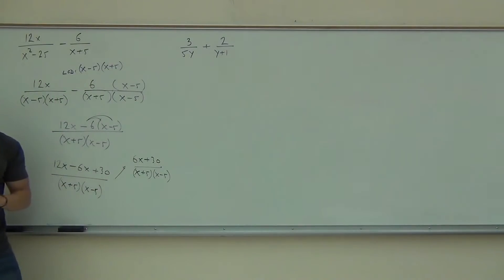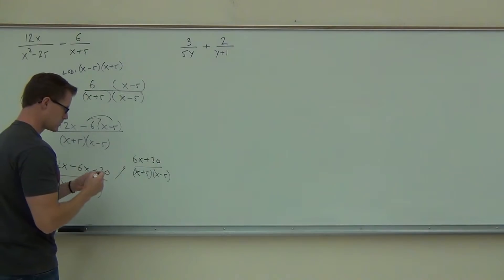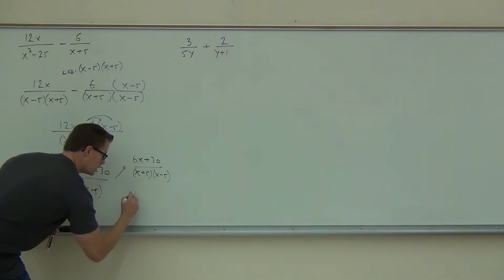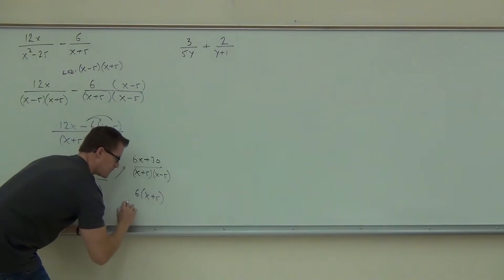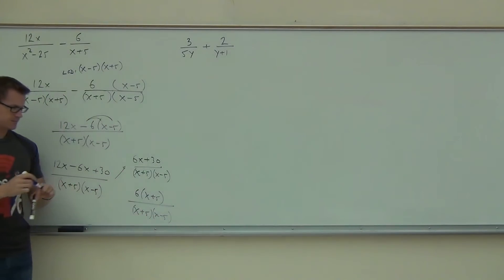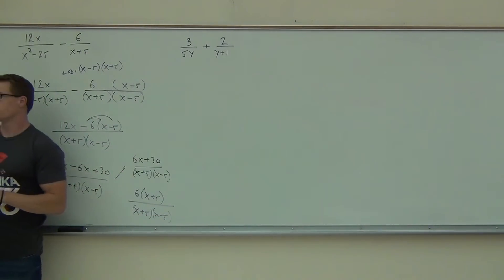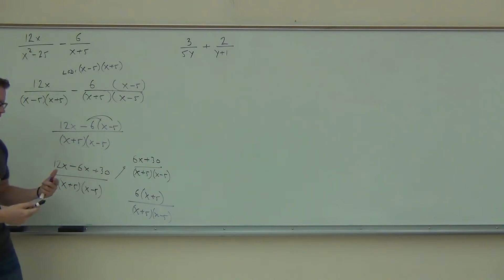So we'll combine our like terms here. We'll get 6X plus 30. Is there anything else that we can do? Sure. Yeah, we can factor that thing. We can factor the 6 out. If we do, we get 6 times X plus 5 over X plus 5 times X minus 5. Does anything simplify? Yeah, so it's worth our time to actually go and factor that thing because X plus 5 is going to go away.